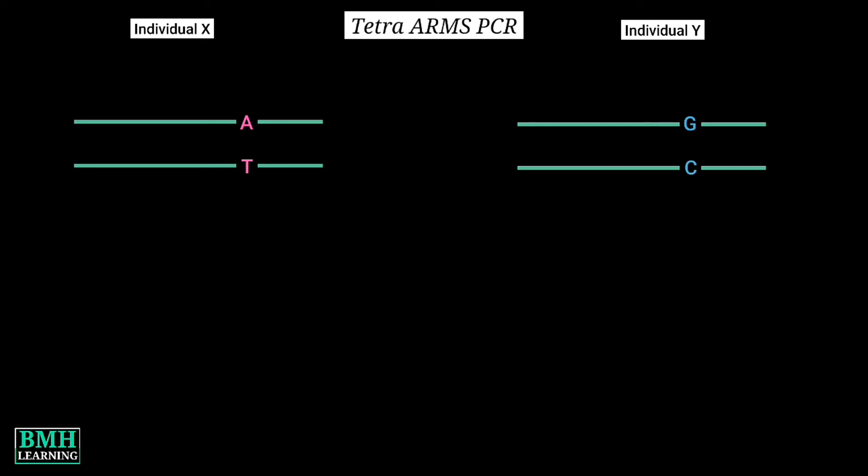So first of all, the outer primers will bind and generate equal sized PCR products in both cases. It's because the sequence composition or configuration is same in all.